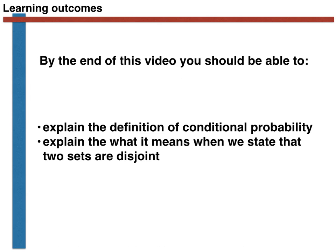With all that in place, you can now hopefully explain the definition of conditional probability, and explain what it means when we state that two sets are disjoint. If you cannot do these things, please watch the video again. Thank you.